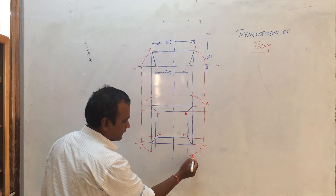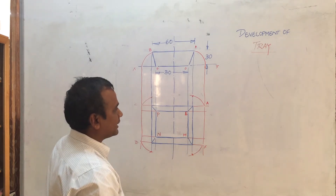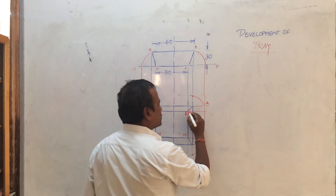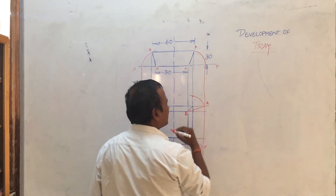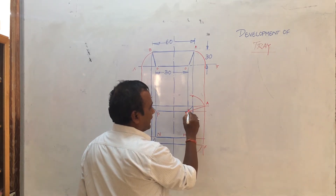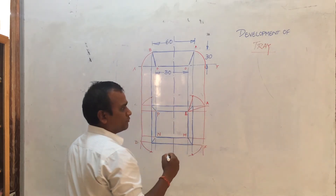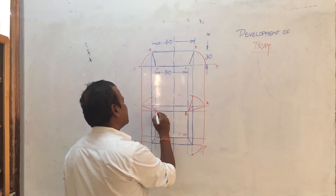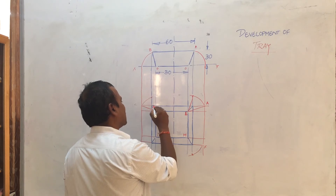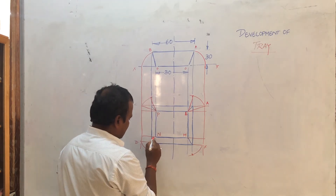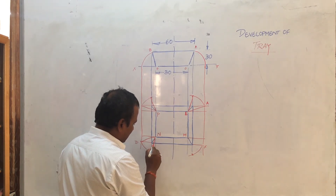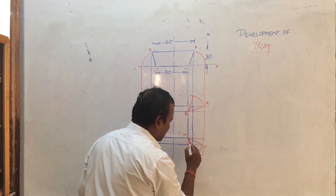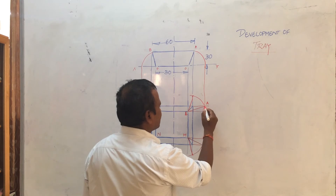Now join the lines. Join the line from L to where it connects at the arc. In a similar way, join P to C along that point, M to D along that point, and M to F along that point. Now join this.